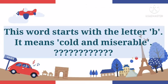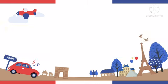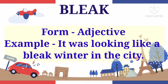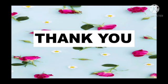Number 5. This word starts with the letter B. It means cold and miserable. Can you guess the word? The word is bleak. Form: it is an adjective. Example: It was looking like a bleak winter. Thank you.